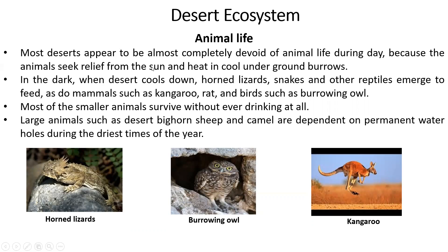Now let's look at the animal life. Animal life is also sparse. During the day, animals are not visible because it is very hot. Animals shelter underground in burrows, which keep them safe and help regulate their body temperature. When the temperature is reduced, animals like horn lizards, snakes, reptiles, kangaroo rats, and birds become active.